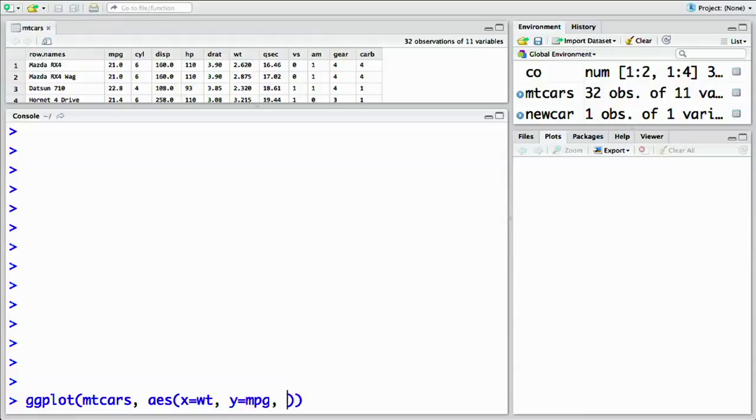and then we add color cylinder, and we add the size as the displacement variable, the volume, and the number of cylinders. We add it as a scatter plot.